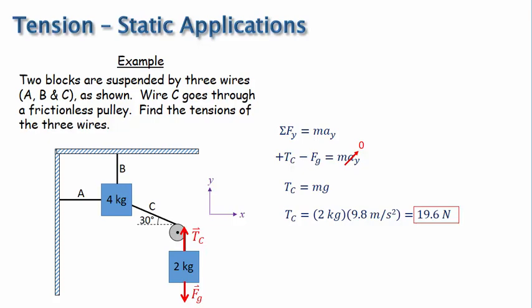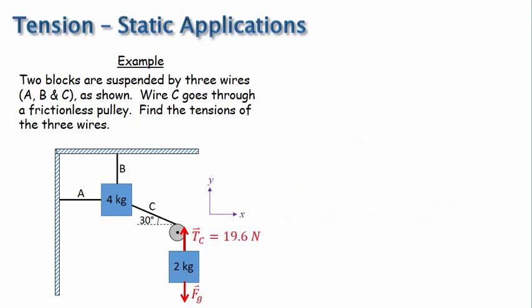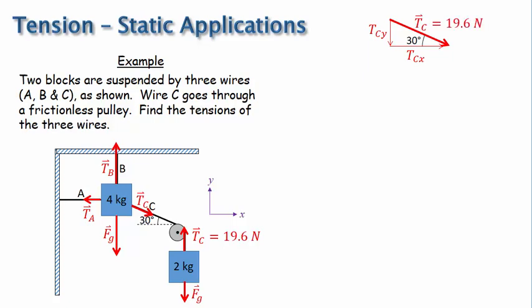Now let's apply Newton's second law to the 4-kilogram mass. I'll add the value of tension C to the diagram because we'll need it later. There are three wires in contact with the mass, so we have those three contact forces — tensions A, B, and C — and then we have the gravitational force as well. Three of the four forces are in the x and y directions, so we don't need trig to find their components. But tension C is at an angle, so we need to calculate its x and y components. We know that tension C is 19.6 newtons, so we can do the trig calculations, which come out to be 17 newtons and 9.8 newtons respectively.